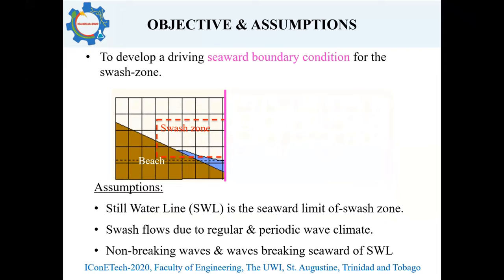A few assumptions were made in the research. First, that the still water line is the seaward limit of the Swash Zone, and thus the location at which the boundary condition is applied. Secondly, that the swash flows are due to regular and periodic waves, and therefore the boundary condition being developed is limited to regular and periodic waves. Finally, that all waves are non-breaking, and if they do break, they break seaward of the still water line position.